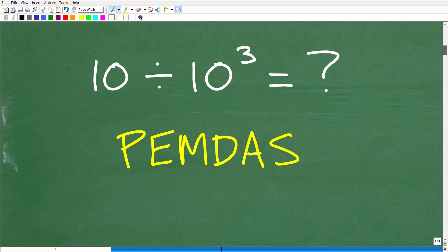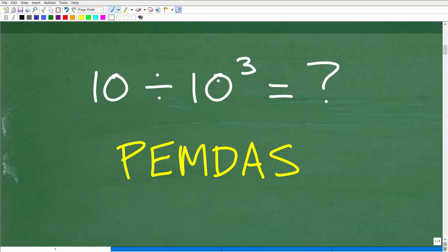All right. So here is the problem. It's 10 divided by 10 cubed. So really the key to doing this problem is we need to figure out what we have to do first. Do we take 10 and divide it by 10, get that answer, and then cube it? Now, of course, if you did it that way, you did it the incorrect way. But why?